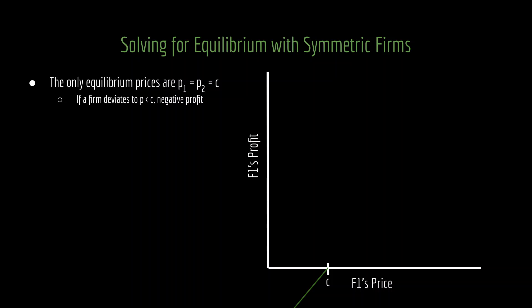Well, imagine firm one deviates to a price less than C. If that's the case, firm one is now winning in the sense that it is making the sale, but it is making the sale at a value that it does not want to make the sale at. It is charging a price that is less than what it costs to make the good. So it is getting a negative utility. So it does not want to deviate to a lower price.